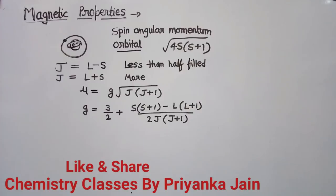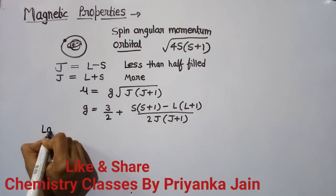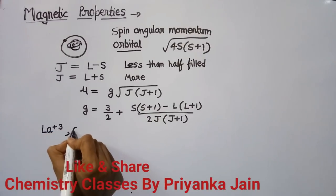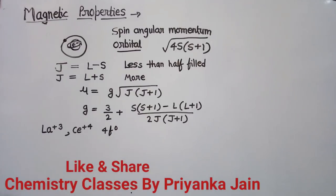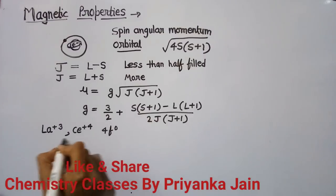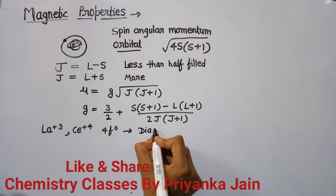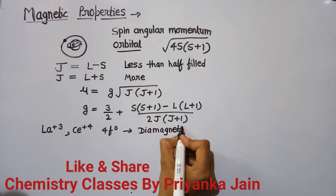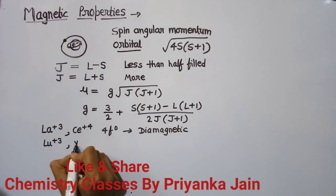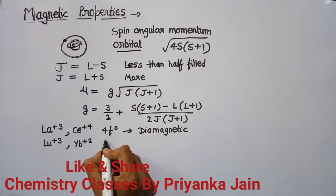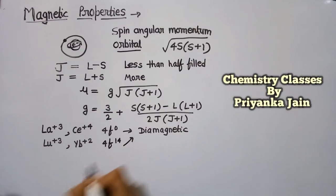When there are unpaired electrons, the element is paramagnetic; when all electrons are paired, it is diamagnetic. La³⁺ and Ce⁴⁺ have 4f⁰ configuration — completely empty f orbital — so they are diamagnetic. Similarly, Lu³⁺ and Yb²⁺ have a completely filled 4f¹⁴ shell, so they are also diamagnetic. The rest of the lanthanides are paramagnetic.